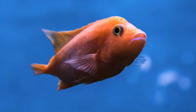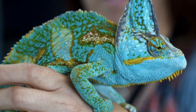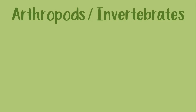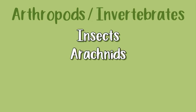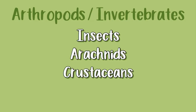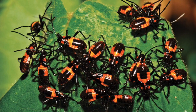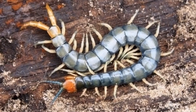Here are some examples of vertebrates. There are four types of arthropods and these are insects, arachnids, crustaceans and myriapods. Here are some examples.